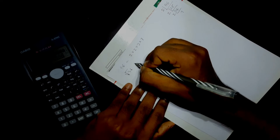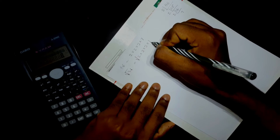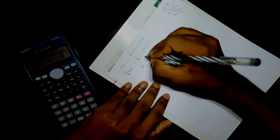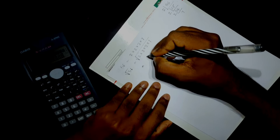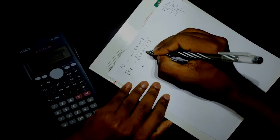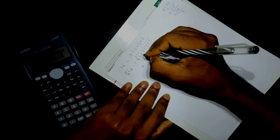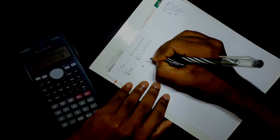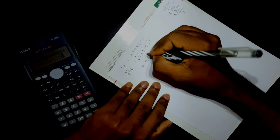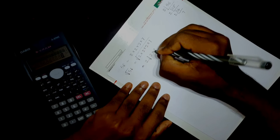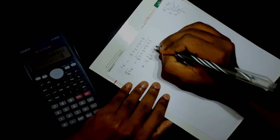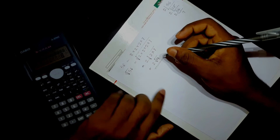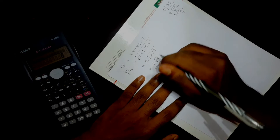Then we have √56, which is √(2 × 2 × 2 × 7). We identify the perfect squares. We have 4 as a perfect square, giving us √(4 × 2 × 7). Since 2 × 7 is not a perfect square, we get 2√14 as the simplified result.